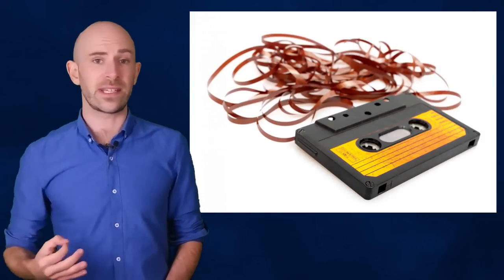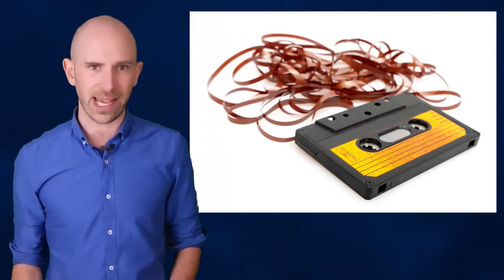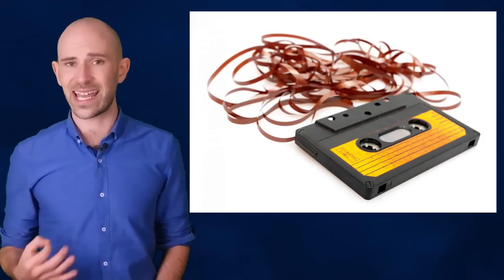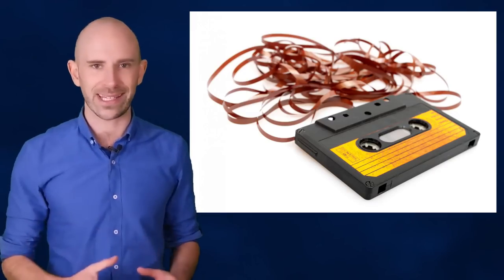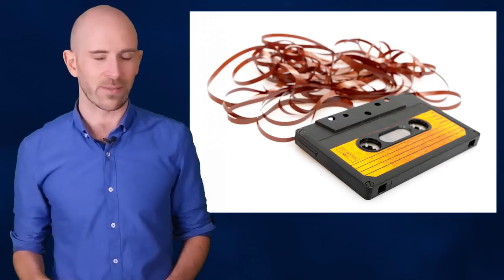Initially, Baker set aside a 30-second strip of tape for the opera section, but had to resort to cutting and adding new pieces of tape to the reel due to Mercury's habit of adding another Galileo every time they tried to record it.